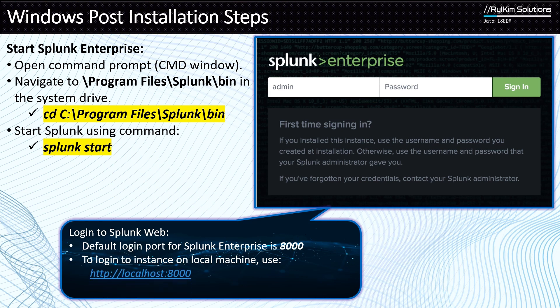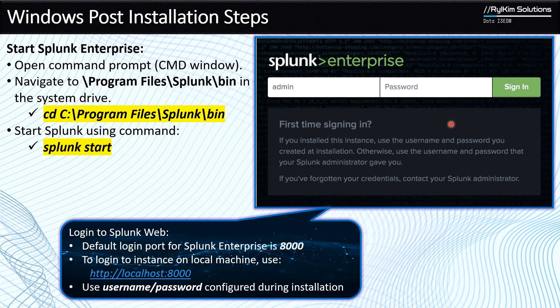To log into your Splunk instance, use the URL: http://localhost:8000. Use 'localhost' if Splunk is installed on your local machine, but if it's remote, replace it with the IP address of that remote instance. This will show you the login prompt where you enter the username and password configured during installation to log into your Splunk Web instance on Windows.